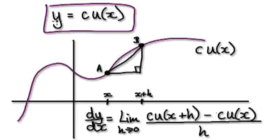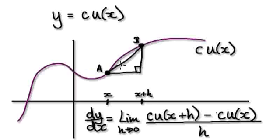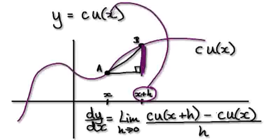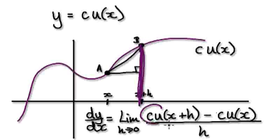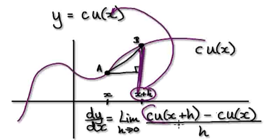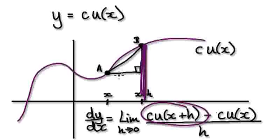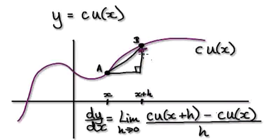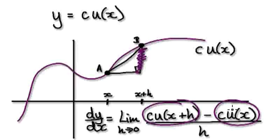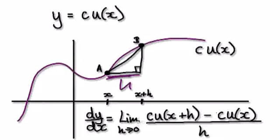So this is our y equals something. Normally, if we want to work out the gradient — the derivative — we would get this height here, which is found by putting x plus h into this. And don't forget, c is just a constant. So this whole height here is basically c times u(x+h). And then you would take away this height here, which is c times u(x). So if you want to find out the change in height, you get c·u(x+h) minus c·u(x), then divide it by h, and then take the limit as h tends to 0.